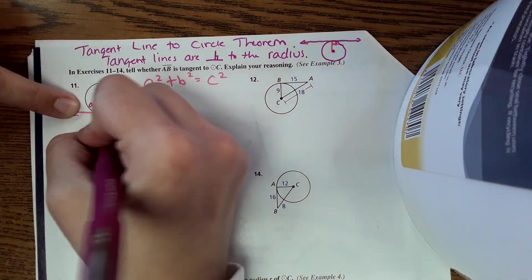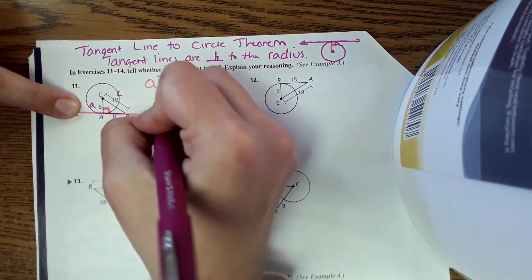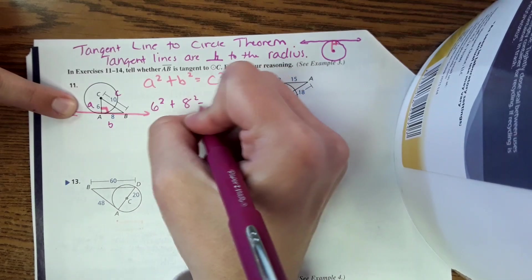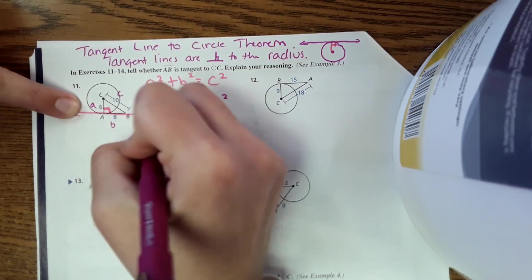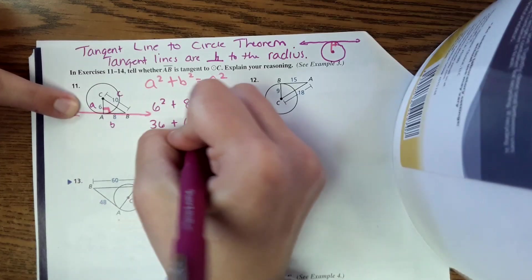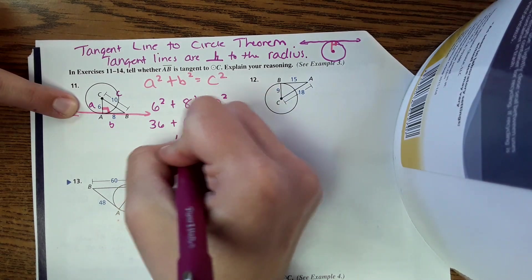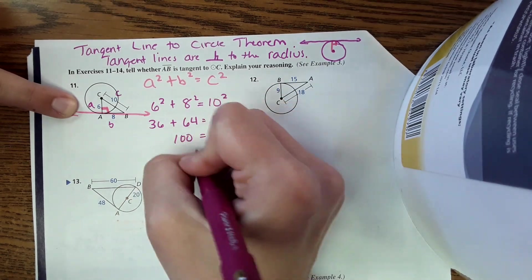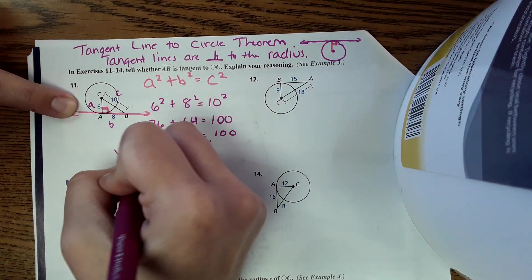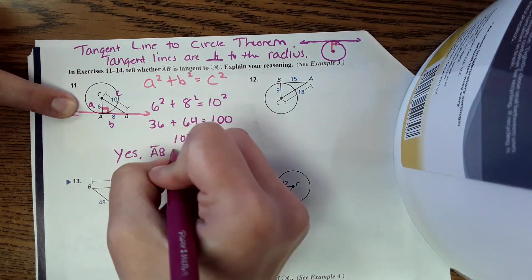So this would be your A and B and then this is your C. So we can do 6 squared plus 8 squared. Does that equal 10 squared? 100 does equal 100, so therefore, yes, AB is tangent.